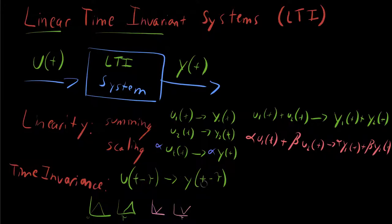It means you're going to get the same output no matter when you pass the signal in. That's what a time invariant system does. A time variant system will have a different y(t) depending on when u(t) was put in.